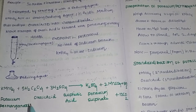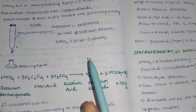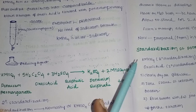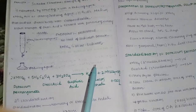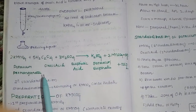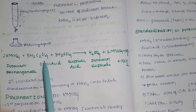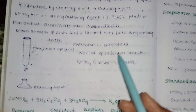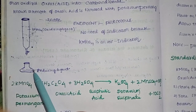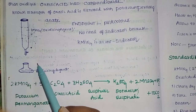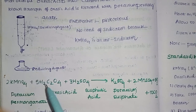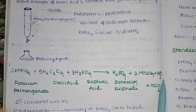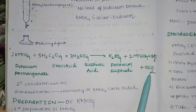The key topics include principle, equation, preparation, and standardization test. The equation shows that potassium permanganate reacts in the presence of sulfuric acid as the acidic medium. The products are potassium sulfate, manganese sulfate, water molecules, and carbon dioxide. This equation is mandatory.